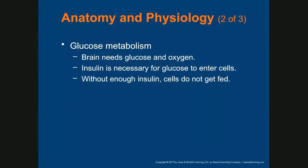It needs glucose and oxygen. Insulin is necessary for glucose to enter the cells. Without enough insulin, the cells do not get fed. Brain cells do not require insulin to get glucose — they can absorb it directly. Everywhere else in the body requires insulin.